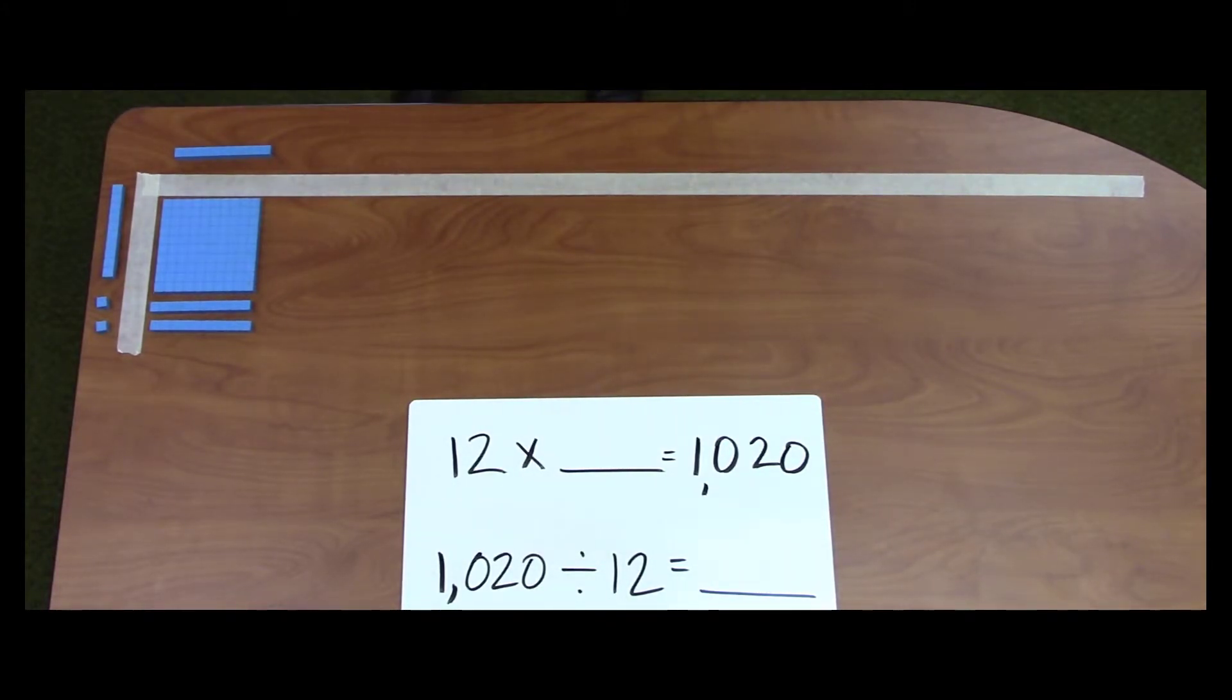When I do this again, place the top, 10 times 10 equals 100. 10 times 1 equals 10. 10 times 1 equals 10. I now have 240 as my area. I will continue building groups of 120.